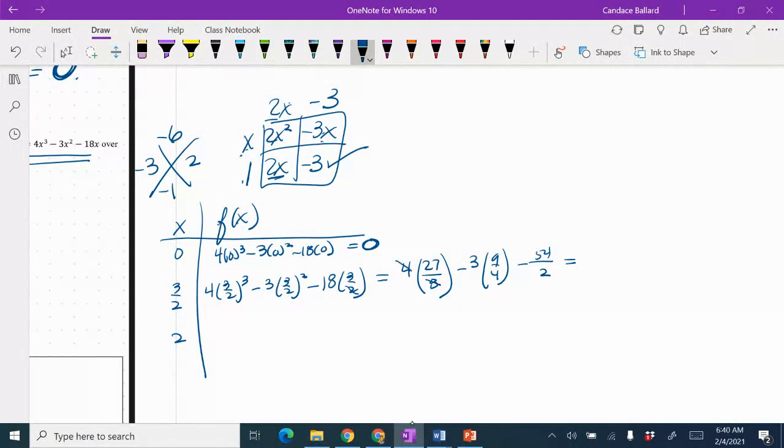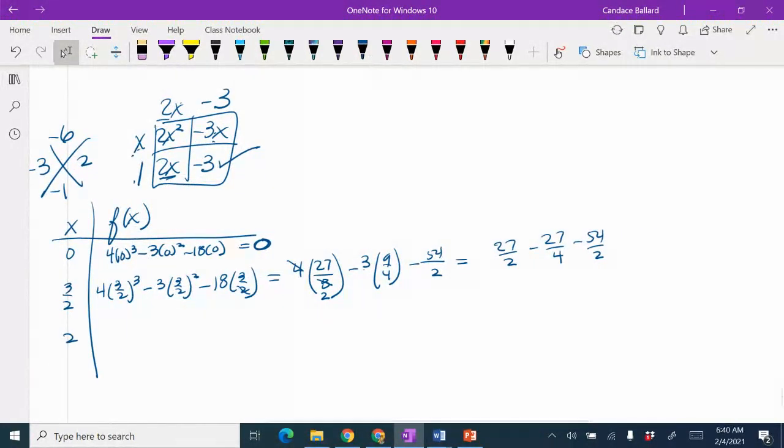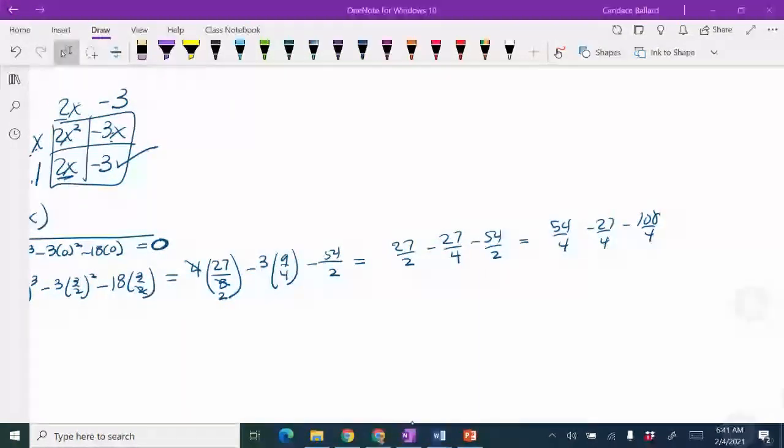Let's see, 4 goes into 8 twice, so now I have 27 halves. Let's see, 3 times 9 would be negative 27 fourths, and then minus 54 halves. I probably shouldn't have reduced as much as I did. I'm going to have to make these into fourths, so I'm multiplying by 2. So 27 is going to be 54 fourths minus 27 fourths minus 108 fourths. So when I add that all up, I end up with negative 85 fourths. And I'm sorry, you needed more room for this problem.